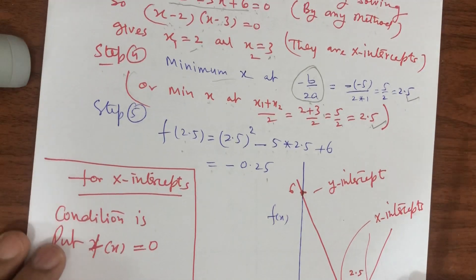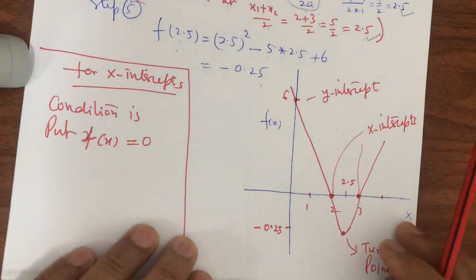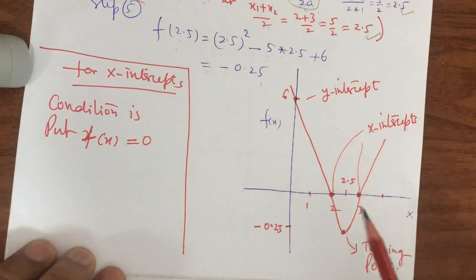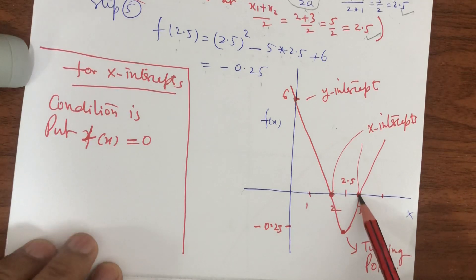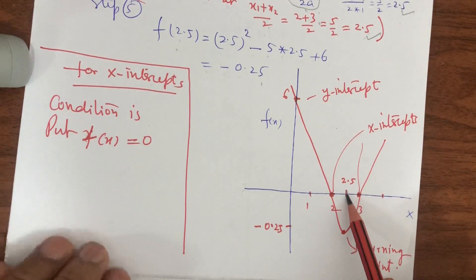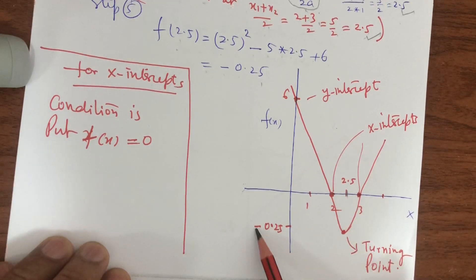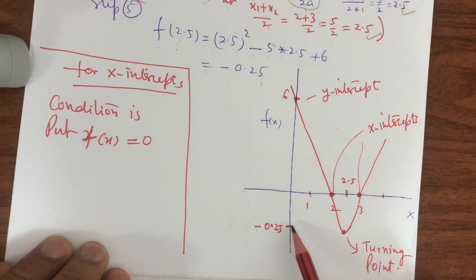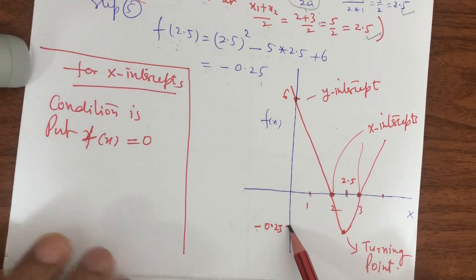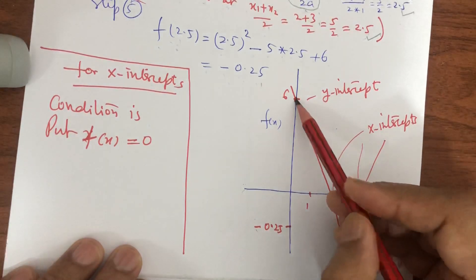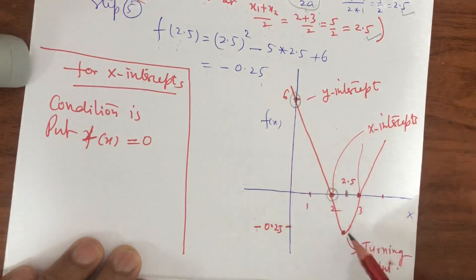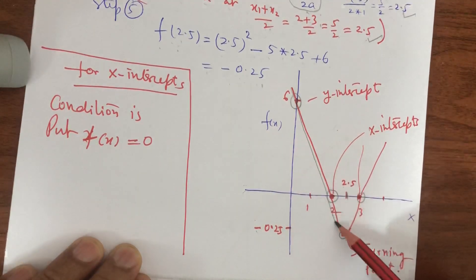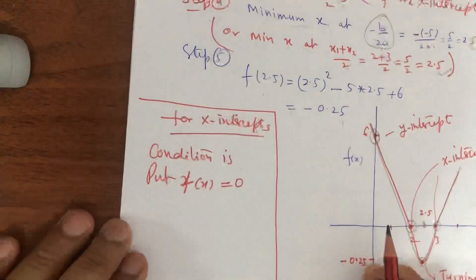Step 5: to find the minimum value, put x = 2.5 into the function: (2.5)² - 5(2.5) + 6 = -0.25. Now we plot: y-intercept at 6, x-intercepts at 2 and 3, and the turning point at (2.5, -0.25). Joining these points gives the full curve of the parabola.